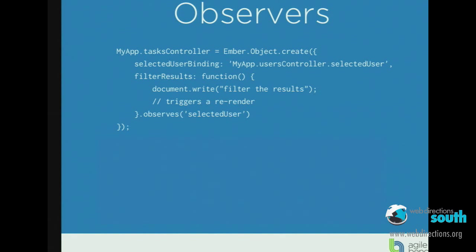Sometimes we want to trigger events when a piece of data is moved around. So when the selected user is updated in the task controller, we now want to filter the results of the tasks listed there. Here's a magic method that gets executed when the observer is called.